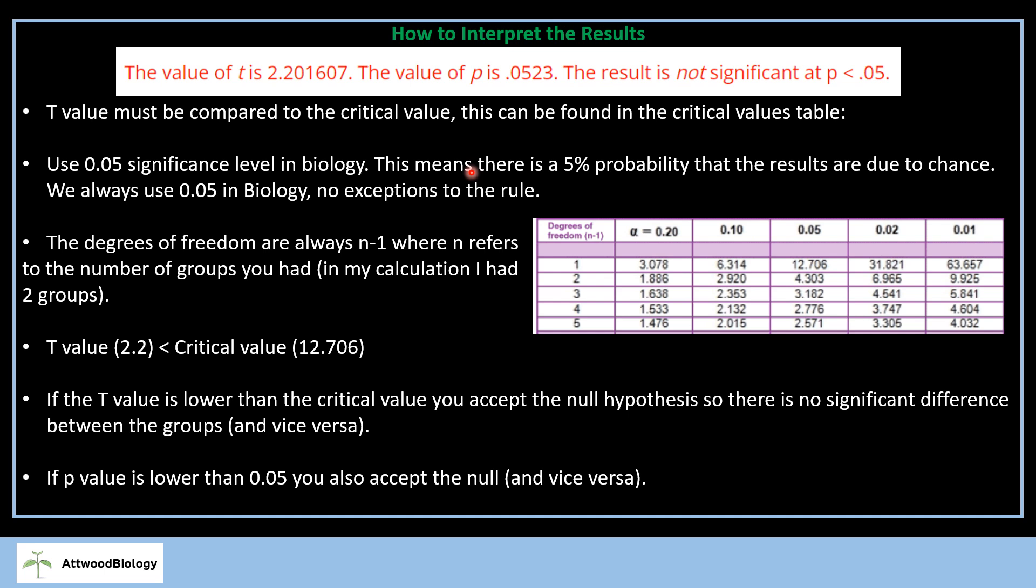You're going to use 0.05 significance level, and that means there's always a 5% probability that the results are due to chance. In biology, we always use 0.05, and there aren't any exceptions to the rule when it comes to the IA.